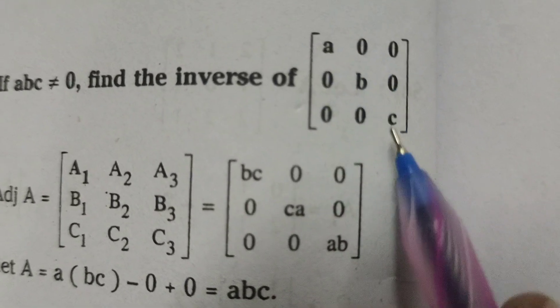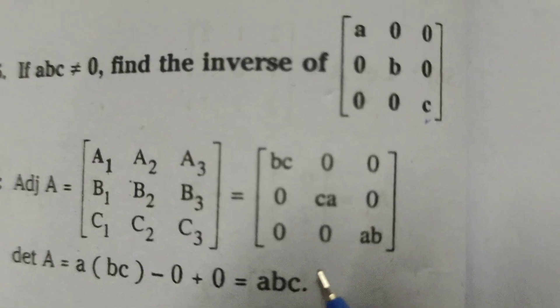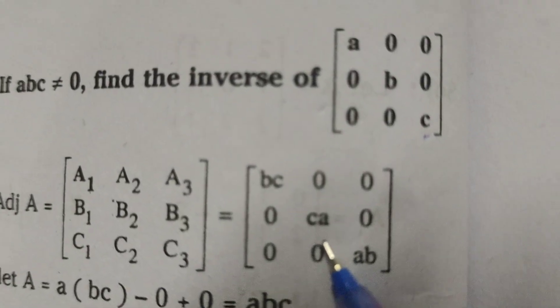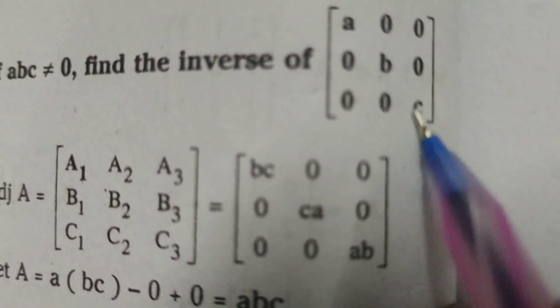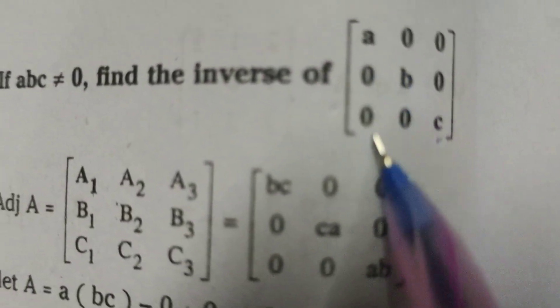Here we will get, except this row, this column and this row, using ad minus bc, ca minus 0, we will get ac or ca. Next, 0 into except this column and this row, we will get 0.